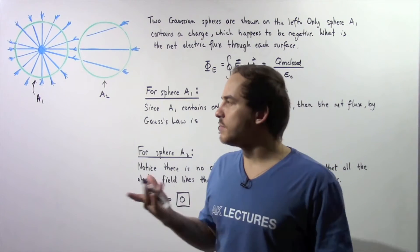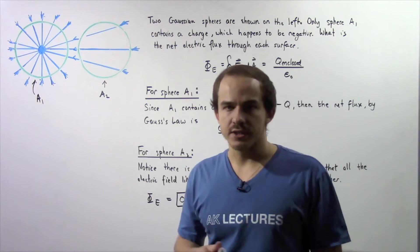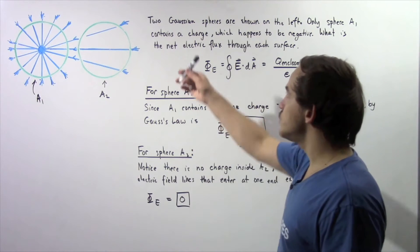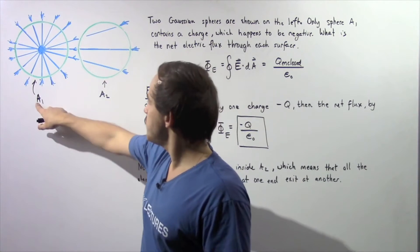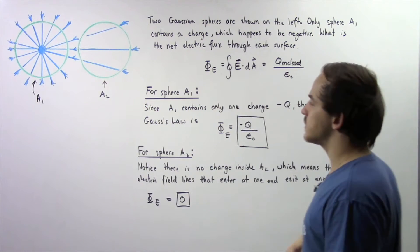So, let's look at the following example that will deal with Gaussian Law. Suppose two Gaussian spheres are shown on the left. We have surface sphere A1 and surface sphere A2.